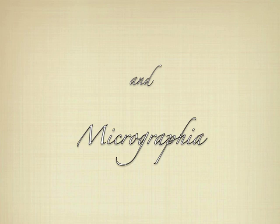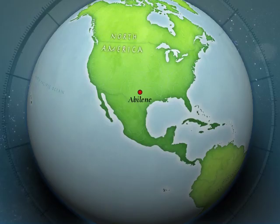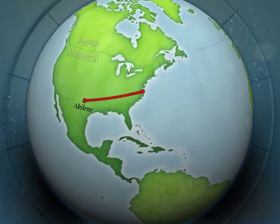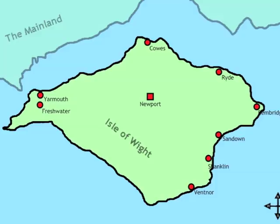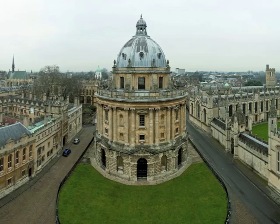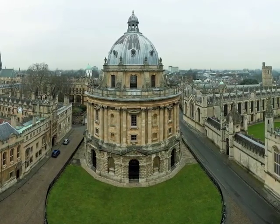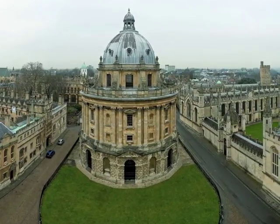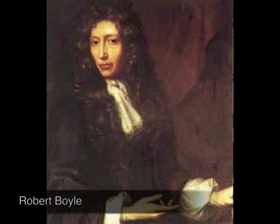Today, we will be discussing Robert Hooke and his contributions to Enlightenment thinking in the 17th century. Robert Hooke was born July 18, 1635, on the Isle of Wight. He was educated by his father growing up and attended Westminster School at age 13. He then attended Oxford University afterwards, where he came into contact with many Enlightenment thinkers, including chemist Robert Boyle, whom Hooke served as an assistant to.